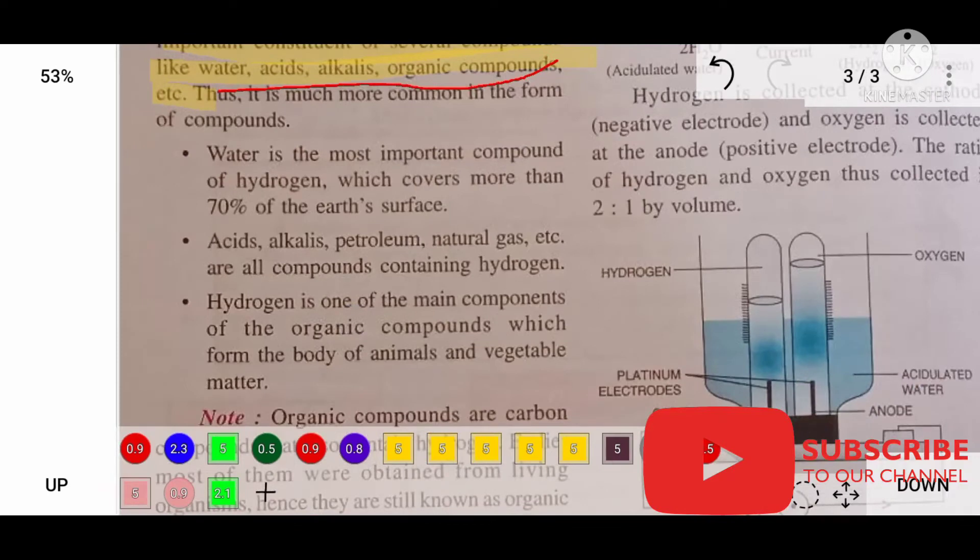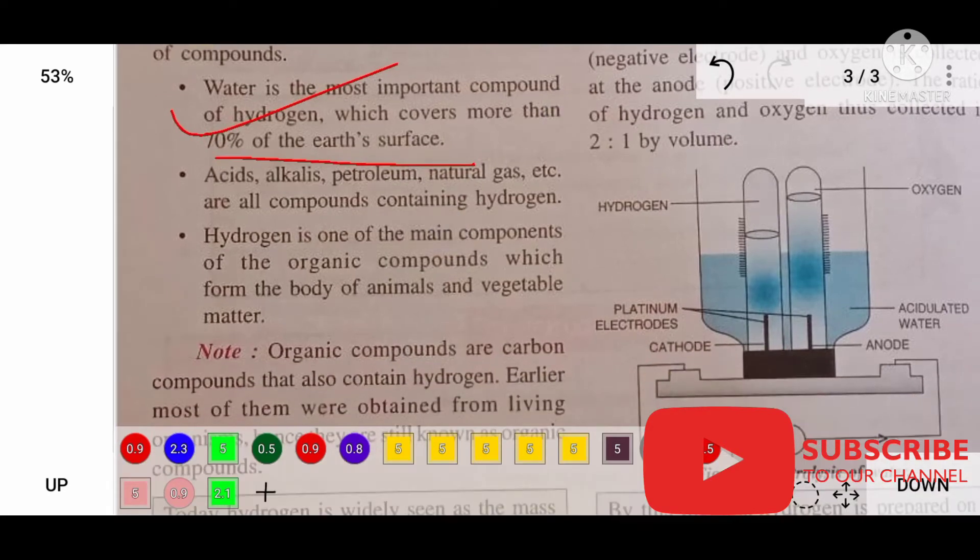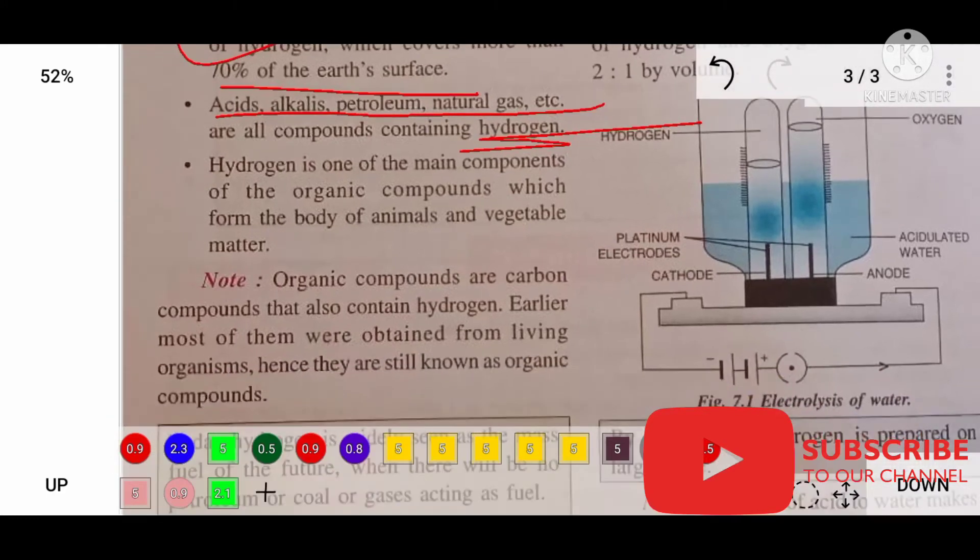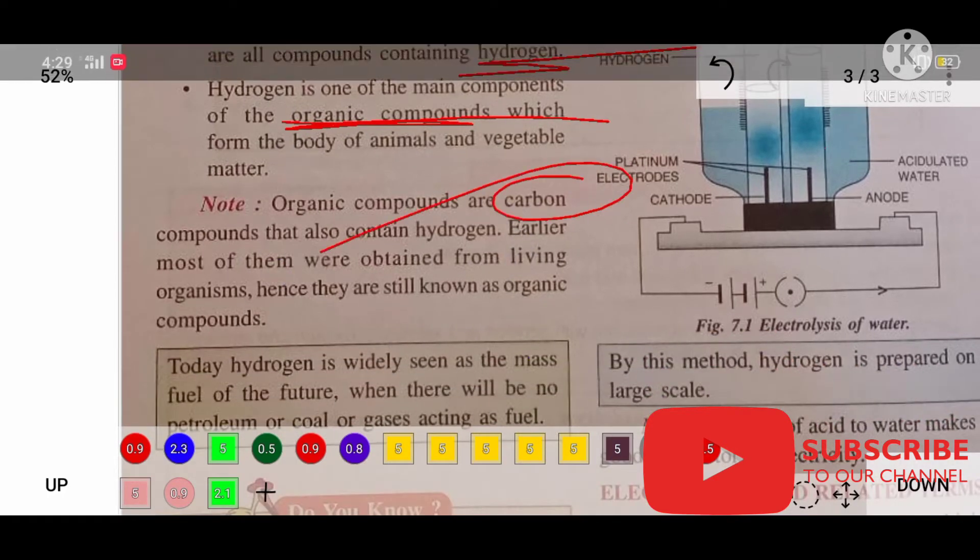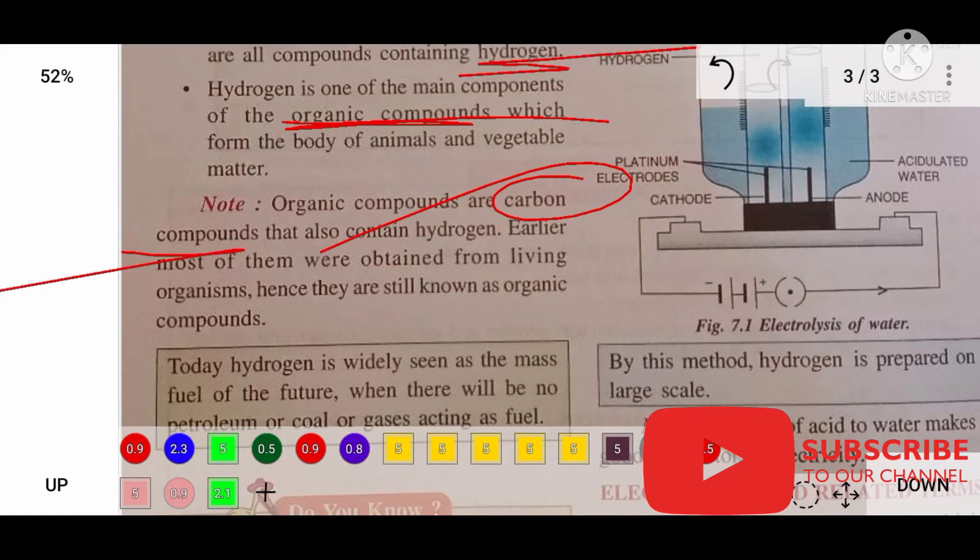Acids, alkalis, and organic compounds all contain hydrogen. Water contains hydrogen. Acids, alkalis, petroleum, natural gas also contain hydrogen. Hydrogen is one of the main components of organic compounds. Organic compounds are carbon-based - we are going to study carbon in the next chapter.